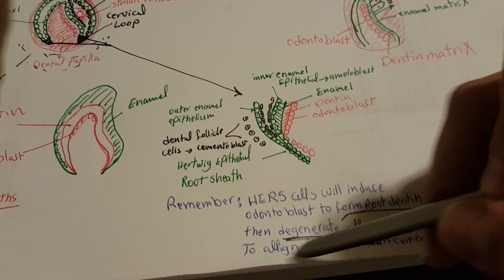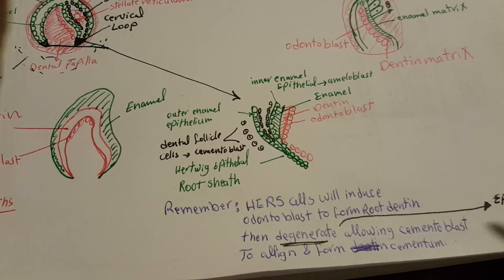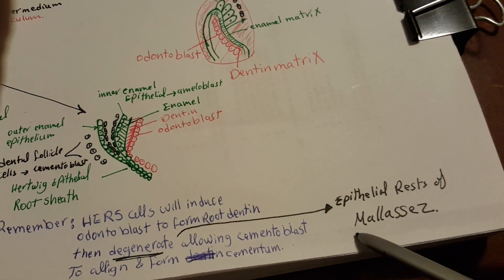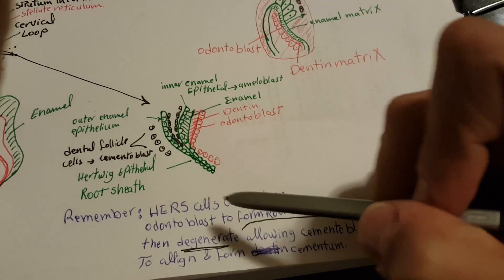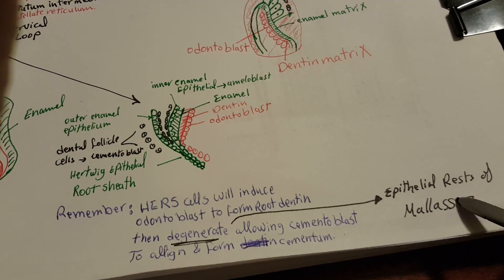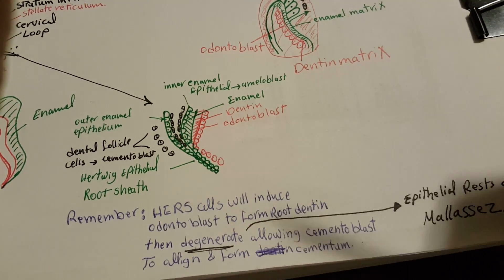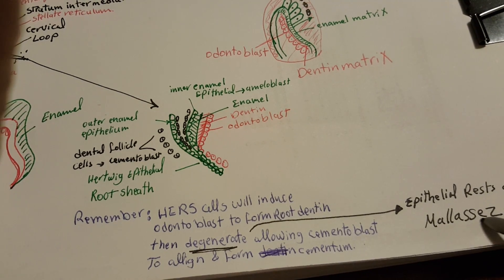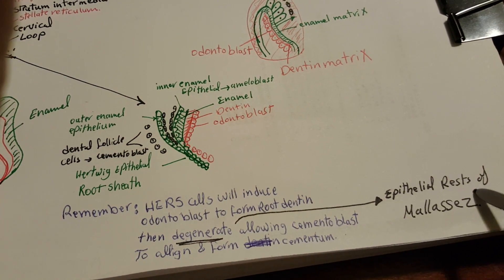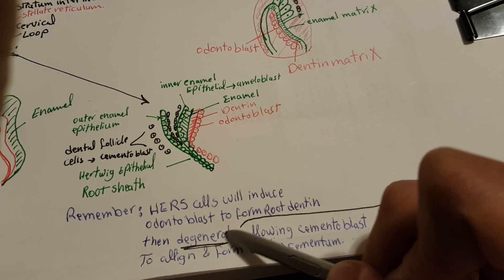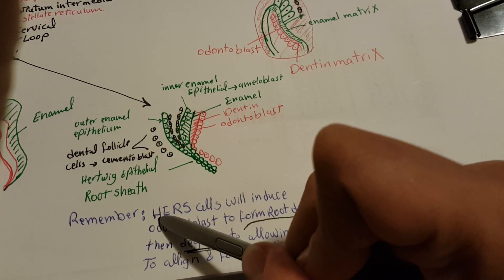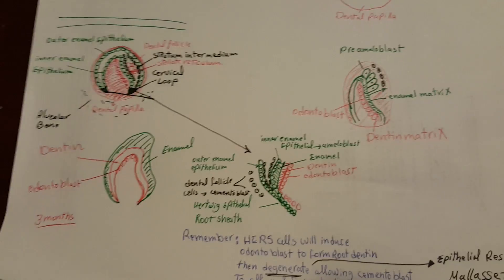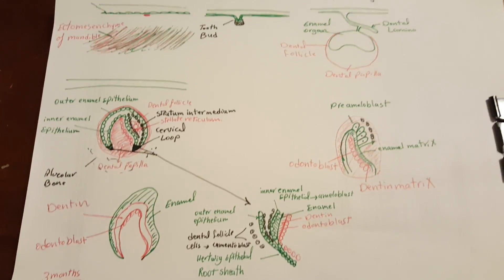The HERS cells don't completely degenerate — some leftover cells remain, called the epithelial rests of Malassez. These cells help in the formation of the periodontal ligament. So the periodontal ligament is formed from the epithelial rests of Malassez, which come from the non-degenerated HERS cells. That's all you need to know — thank you.